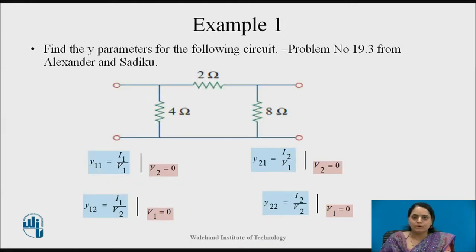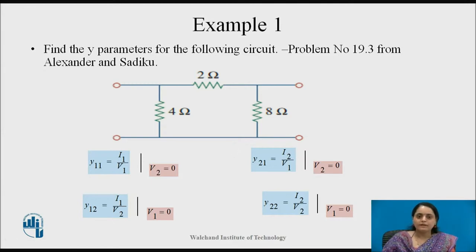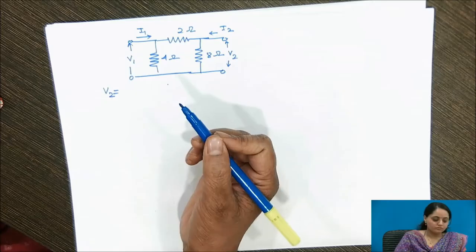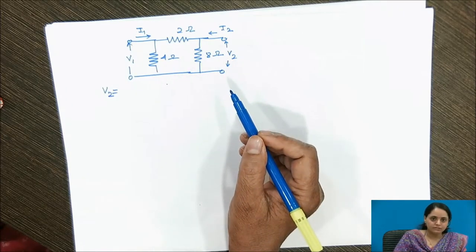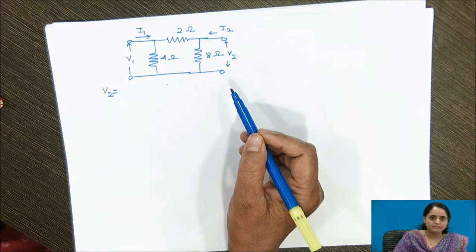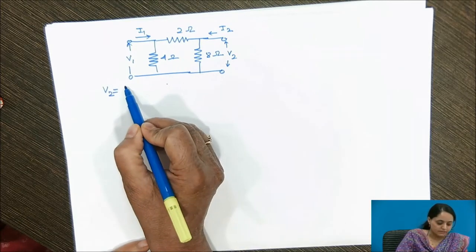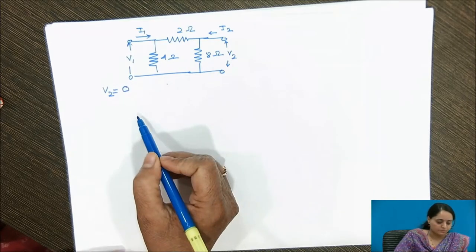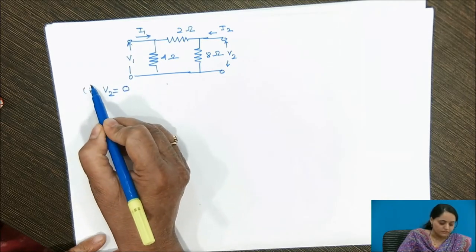Now let us solve a problem based on this. We have a two-port network and need to find the Y parameters. The Y parameters are calculated using the equations shown here. To calculate Y11 and Y21, we need to short-circuit the second port, which means V2 is made equal to zero. This is the first condition.